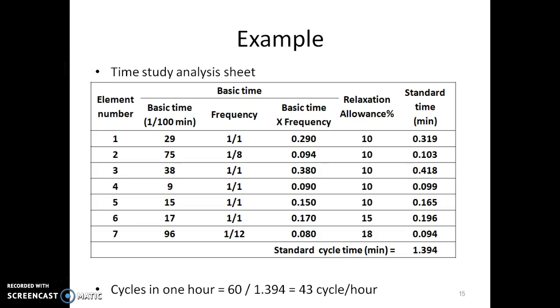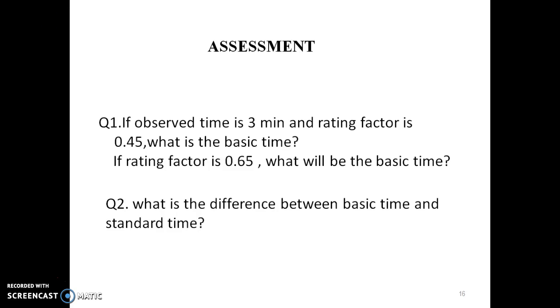Here the basic time is multiplied by frequency. Then relaxation allowances are added to get the standard time. There are seven different elements. For all seven elements, standard time is calculated. Finally, to calculate total standard cycle time, all the standard times of elements are added. Hope you have understood the standard time calculation method. You can try to solve these questions. Thank you.